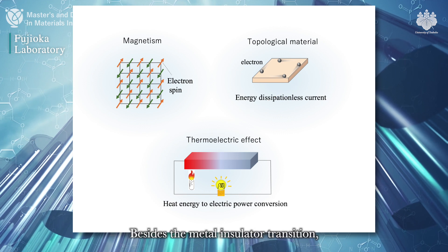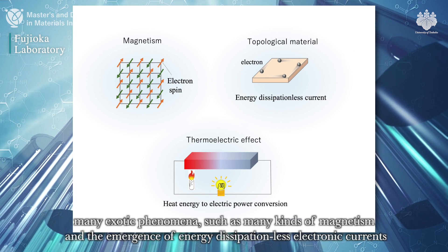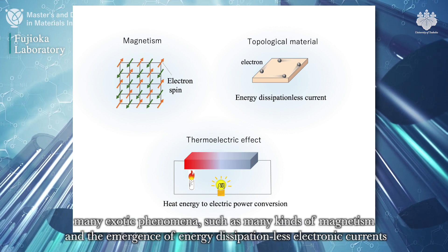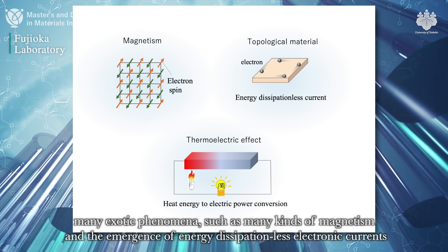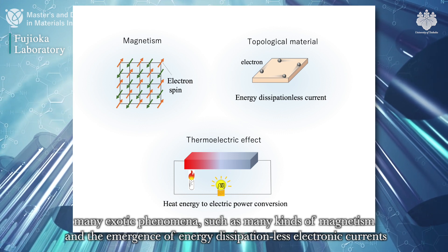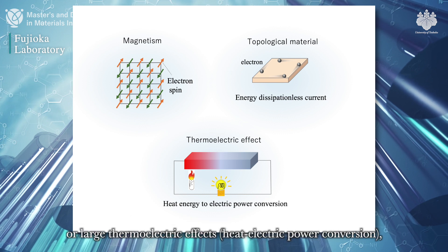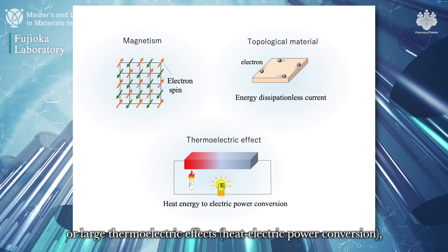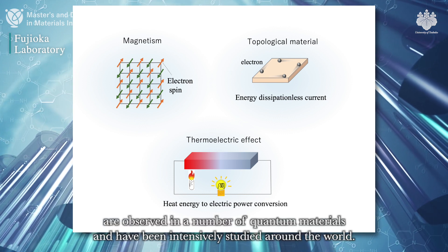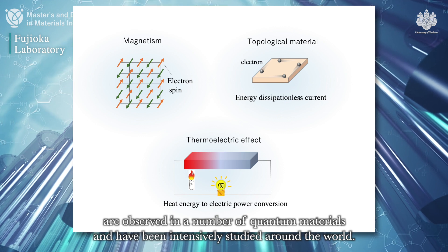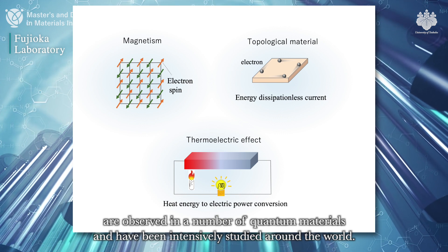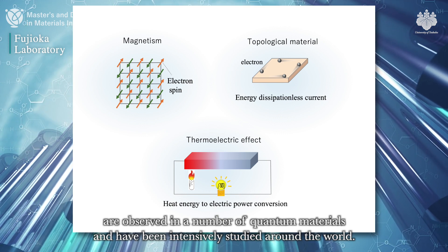Besides the metal-insulator transition, many exotic phenomena — such as many kinds of magnetism, the emergence of energy dissipationless electronic currents, and large thermoelectric effects for heat-to-electric power conversion — are observed in a number of quantum materials and have been intensively studied around the world.